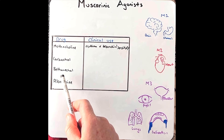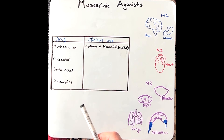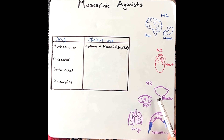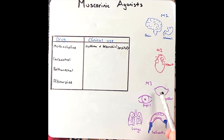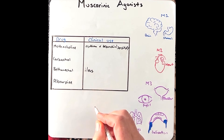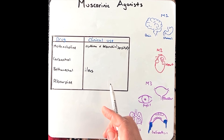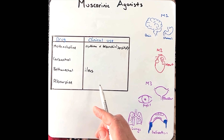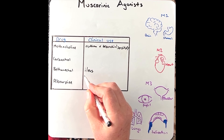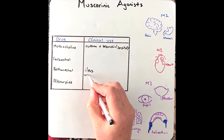Bethanechol increases smooth muscle action in the gastrointestinal tract and the urinary bladder, therefore increasing peristalsis and bladder emptying. Bethanechol can be used in ileus, which means a decrease in peristalsis activity — this can occur after surgery or after spinal cord injury. Bethanechol can also be used in urinary retention.